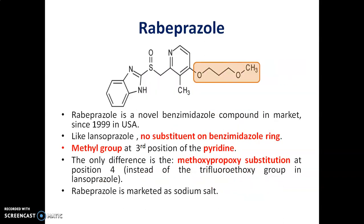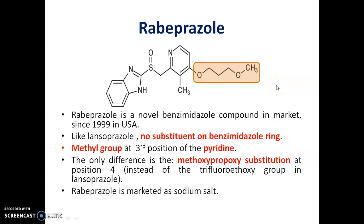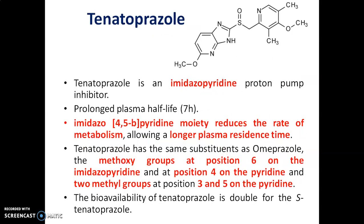Rabeprazole was introduced in 1999 in the USA. Like lansoprazole, it also does not have any substituent on the benzimidazole ring. However, it contains a methyl group at the 3rd position of the pyridine ring as well as a methoxypropoxy substitution at the 4th position. Rabeprazole is marketed as a sodium salt.